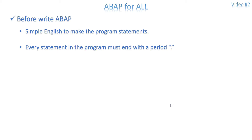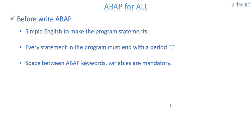Every statement in the program must end with a period — a period is nothing but a dot. In high-level languages like C, some looping and condition statements don't end with any period, but in ABAP every statement should end with a period. Also, the space between ABAP keywords or variables is mandatory. For example, to write A = B + C, you write: A space equals space B space plus space C dot. There is no space between the dot and the last variable, but everywhere else you need at least one space, otherwise you will get a syntax error. More than one space is fine, but minimum one space is required between keywords and variables.